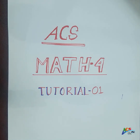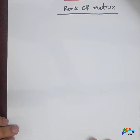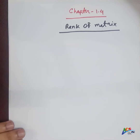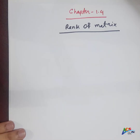Hello everyone, welcome to ACS Tutorial Class Part 4 of Math 4. In Part 3 we completed 1.1, 1.2, 1.3, and in Part 4 we will complete 1.4 — about finding the rank of a matrix. We will use the elementary row operation method, also called the row reduced row operation method, to find the rank of a matrix.